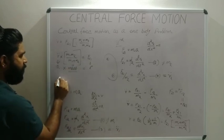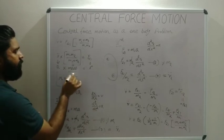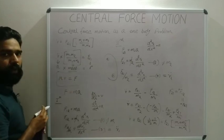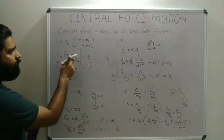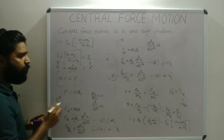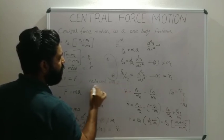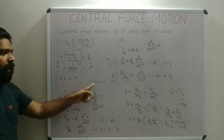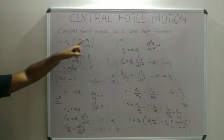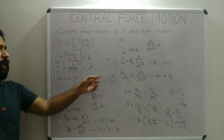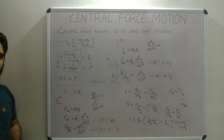The quantity m1·m2/(m1 + m2) is represented by μ (mu), so the equation becomes μ · d²r/dt² = F, where μ = m1·m2/(m1 + m2) is known as the reduced mass. This is the central force motion as a one-body problem: we started with two bodies but the final result is expressed as a single-body equation.